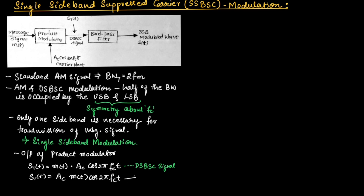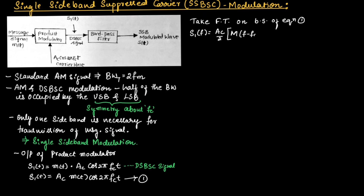If we rearrange the equation, we can write S1(t) = AC · M(t) · cos(2π FC t). Call this equation number 1. Taking the Fourier transform on both sides, we get S1(F) = (AC/2) · [M(F − FC) + M(F + FC)], which we can write as S1(F) = (AC/2) · M(F − FC) + (AC/2) · M(F + FC). Let us call this equation number 2.